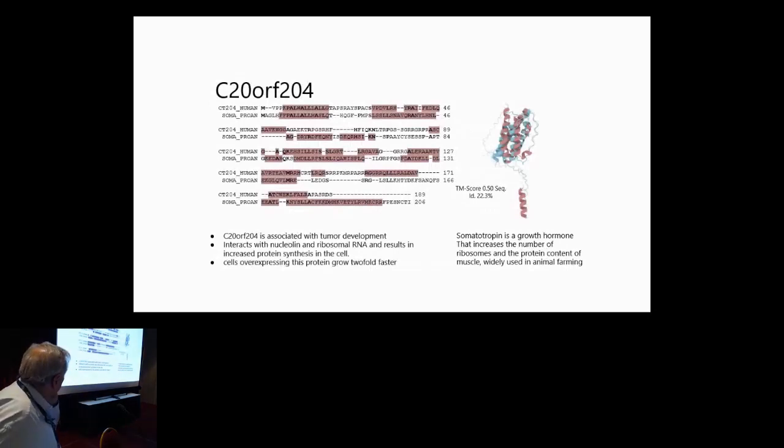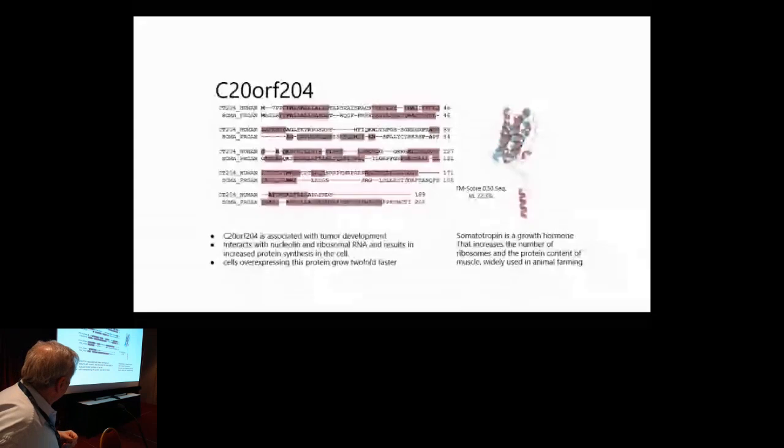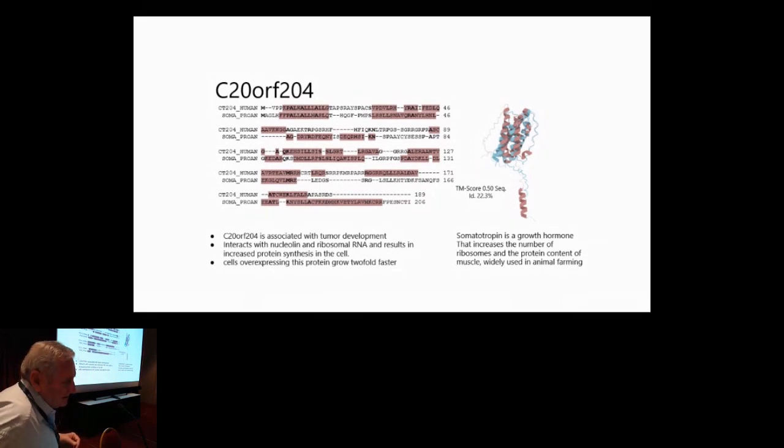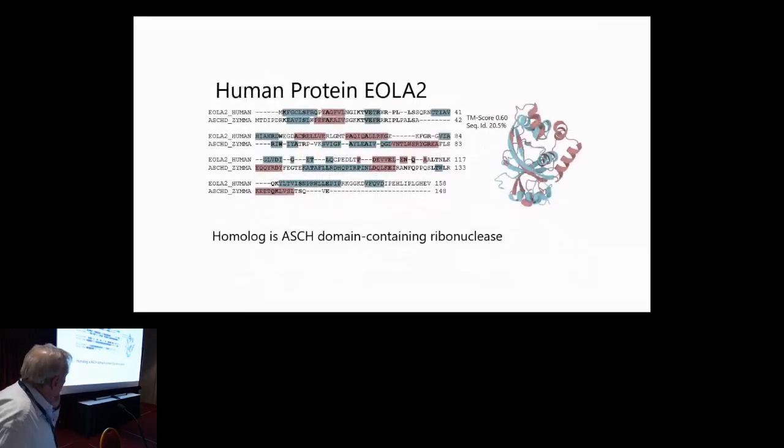Here's an open reading frame 204, and it's known to interact with nucleolin and ribosomal RNA. And so, it matches with somatotropin, which is a growth hormone, and it makes sense that it increases the number of ribosomes. So, you know, these kinds of, and there's the structure agreement on the right where one's blue and one's red. So, we believe that this sort of thing, this was another case where we have this structure match on the right with sequence match on the left. And so, it looks like this protein is an ASCH domain containing ribonuclease. So, you know, it's much more specific.